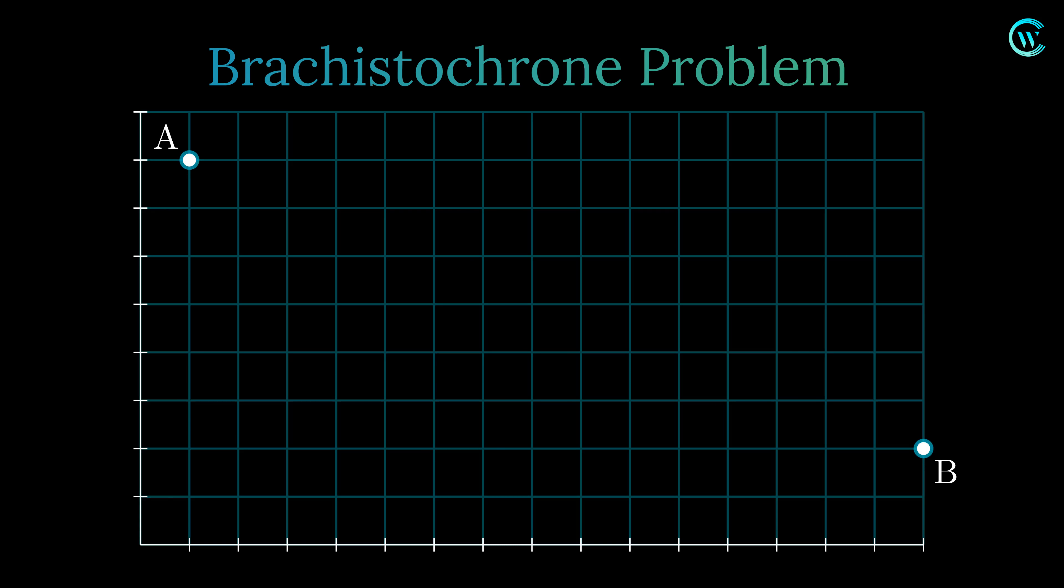Let's consider A and B as two given points. Now what is the path of least time that leads to the fastest descent from A to B due to gravity?